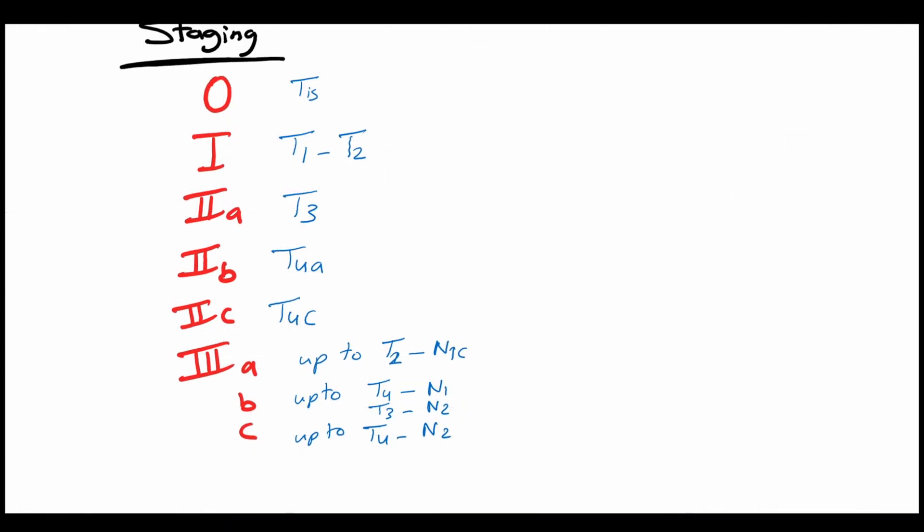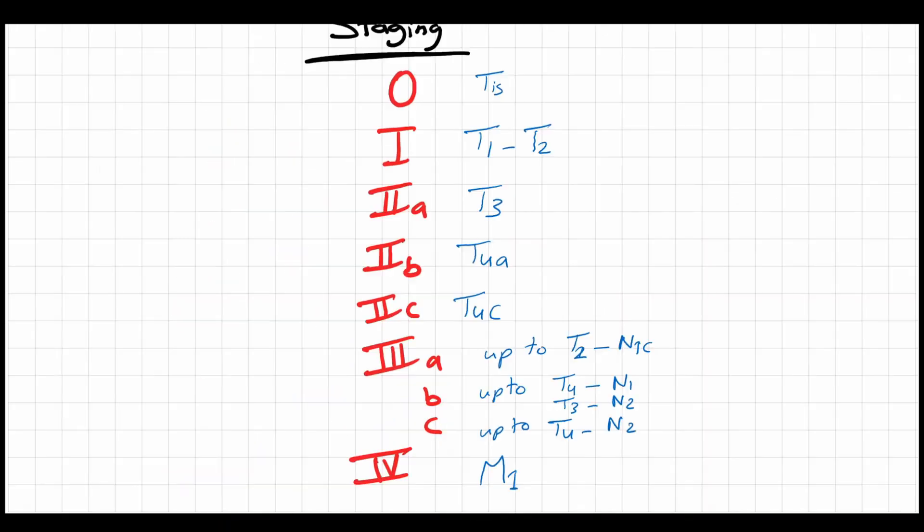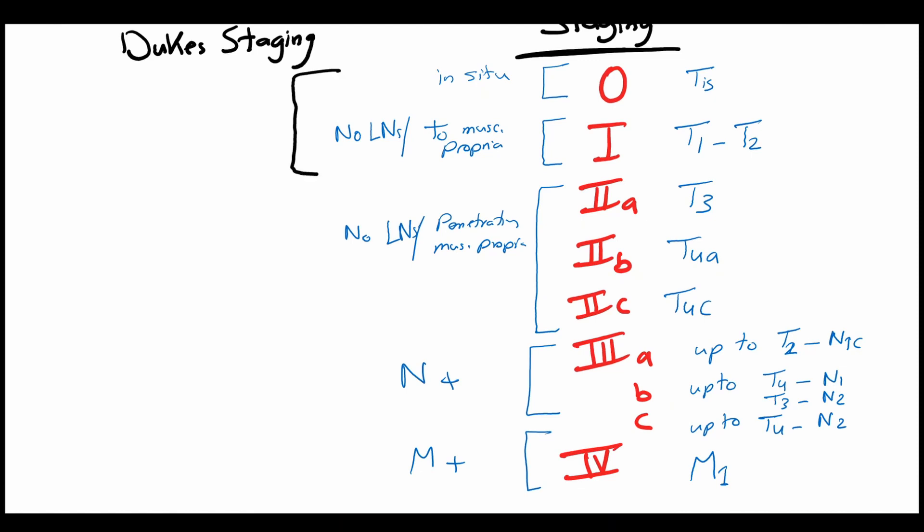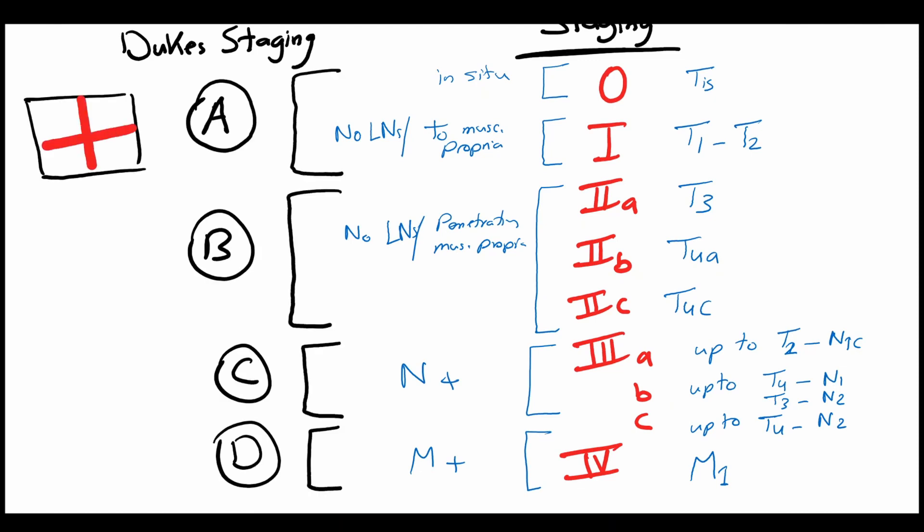A simplified version of this staging system is the Duke's staging system, in which stage A is the carcinoma in situ and carcinoma confined to the muscular propria, stage 0 and 1. Stage B is without lymph nodes invasion but penetrating the muscular propria. And stage C with lymph nodes invasion. Stage D is the distant metastasis. This staging system is widely known and used in the United Kingdom.